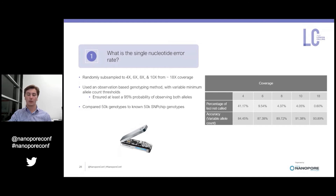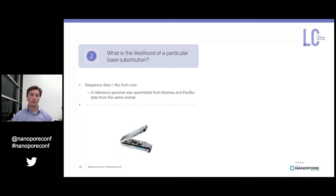You can see the accuracies here for the different coverages, as well as the percentage of positions which we didn't call. These positions had less than twofold coverage, and at fourfold coverage we saw about 40% of those positions with fewer than two reads spanning them. We do see a plateau in accuracy at around 93–94%, because our genotyping script assigned loci with more than two possible genotypes as an error rather than discriminating between the true genotype and the sequencing error.